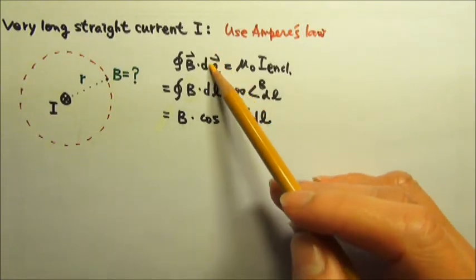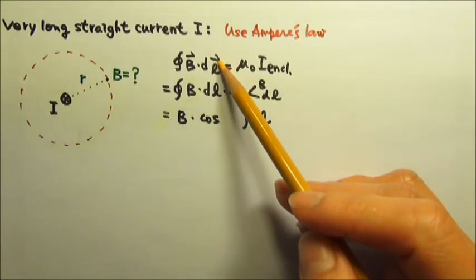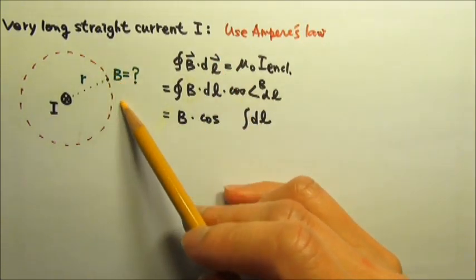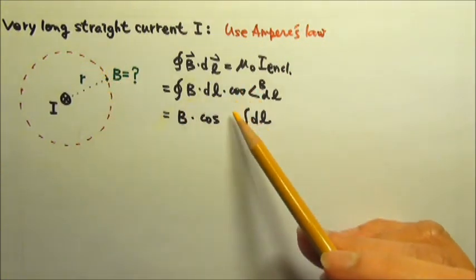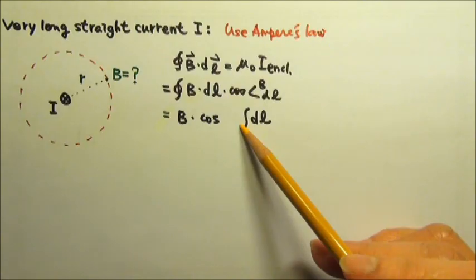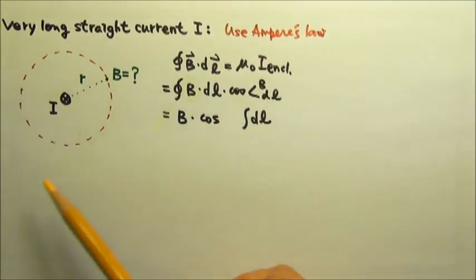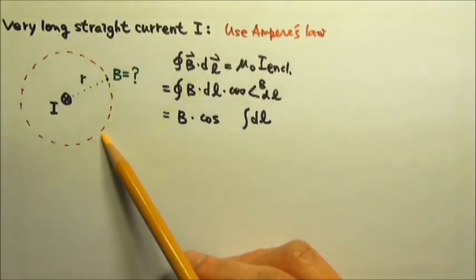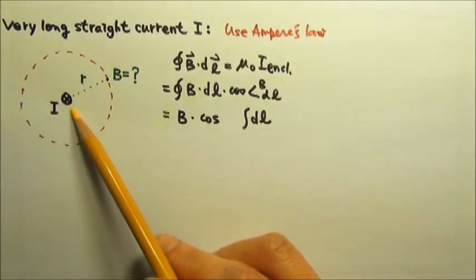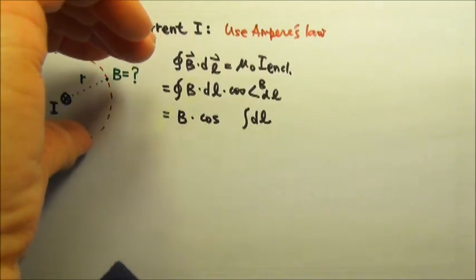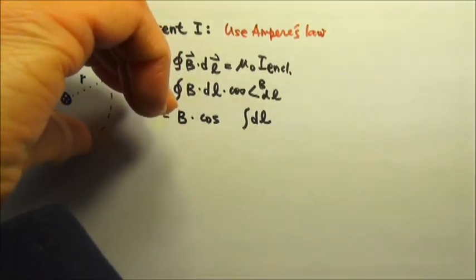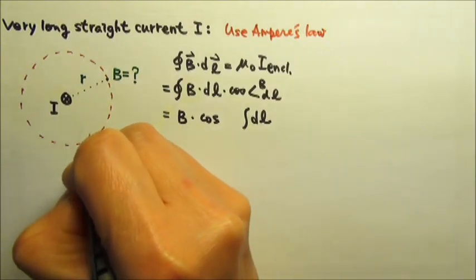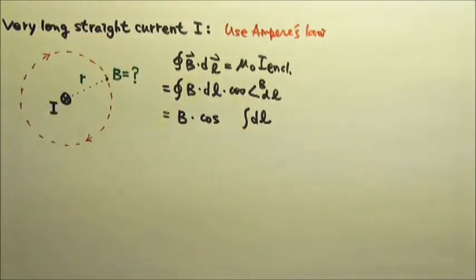An Ampere's loop has a direction, although it really does not matter whether we choose a clockwise or counterclockwise loop. We just have to proceed accordingly. But for convenience, I usually make the Ampere's loop follow the direction of magnetic field. For example, this into the page current has magnetic field lines that are clockwise, so we will make our Ampere's loop clockwise as well.